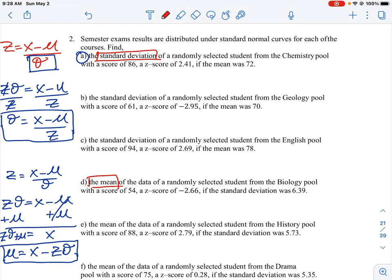So we want to find standard deviation, that's sigma. We know our data point, which is our score value, which is 86. So that's x. So we're going to go 86. We know our mean is 72. So I'll subtract 72. And then we're dividing it by the z score of 2.41.